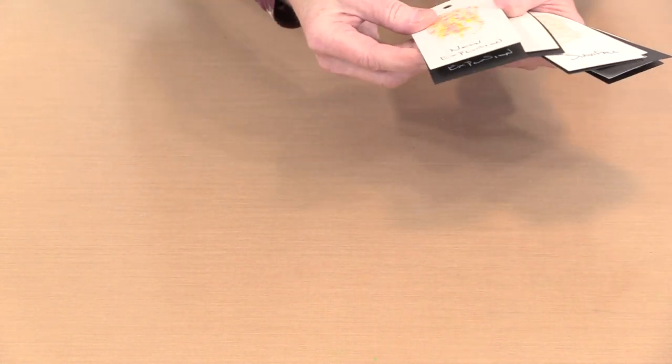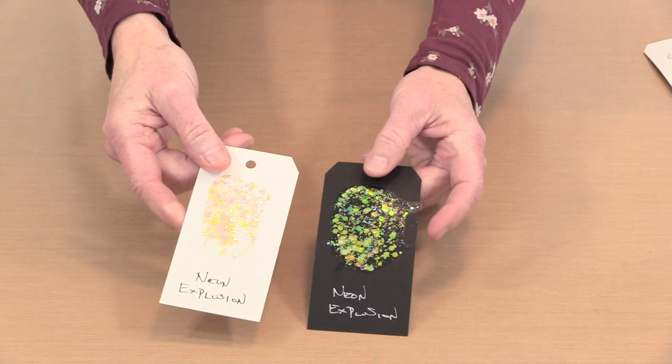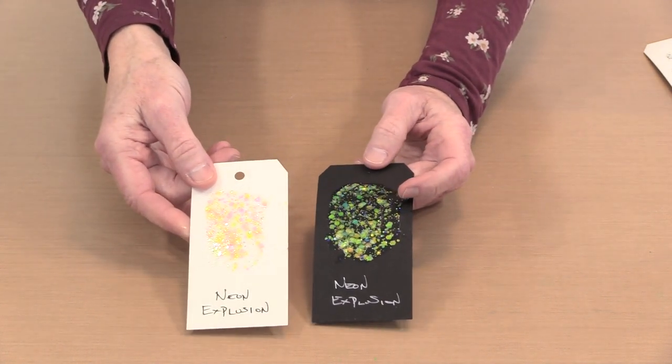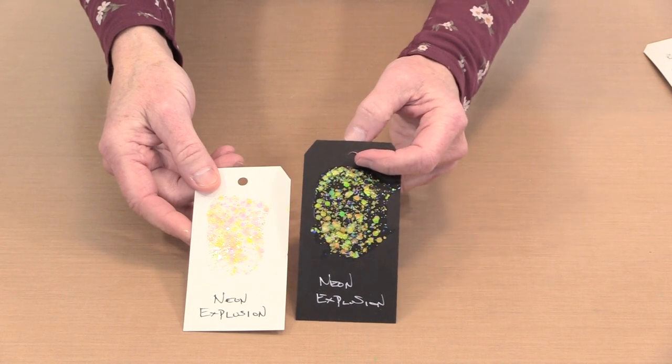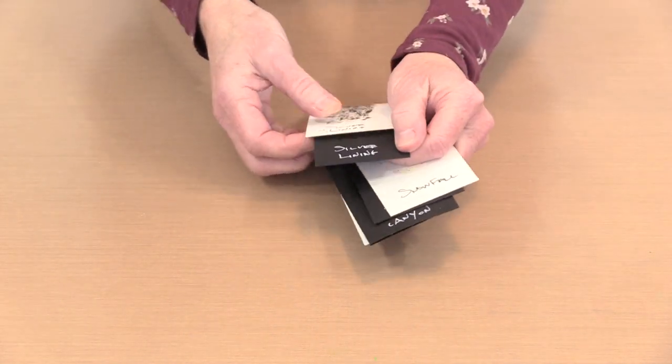We have Neon Explosion, and this is the one that looks the most different on black and on white. On the white watercolor you can see some pink in there, but there's very little pink showing once it gets on black. So with this one you're going to get a different look depending on what the surface color is.